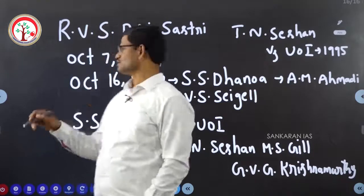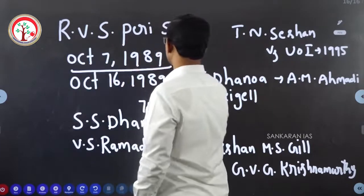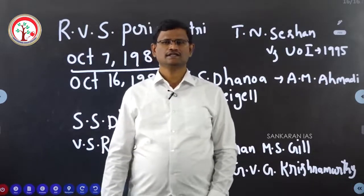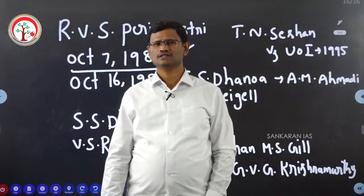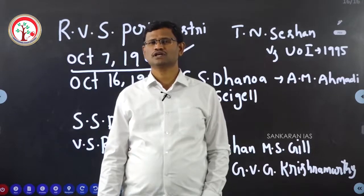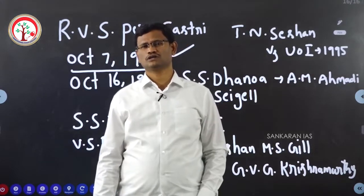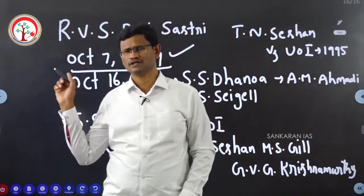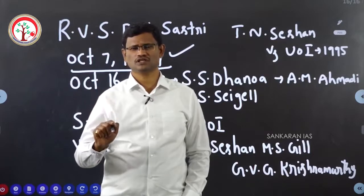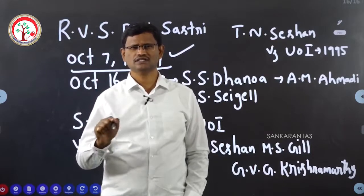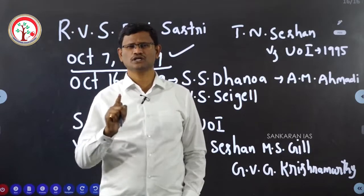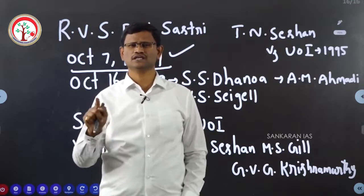Keeping that in mind, on October 7th 1989, the single-member Election Commission of India was made a multi-member Election Commission of India by the President through a notification. On the basis of this notification, on October 16th 1989, two new Election Commissioners were appointed in addition to the Chief Election Commissioner Peri Shastri.